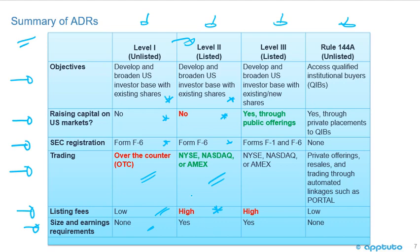Level 3 listed ADRs develop and broaden the U.S. investor base with new shareholders, meaning they can raise capital on U.S. markets through public offerings — highlighted in bold green. The form is F1, and they're listed on the NYSE, NASDAQ, or Amex, so there are high listing fees and size and earnings requirements. That is the key difference between Level 2 and Level 3.